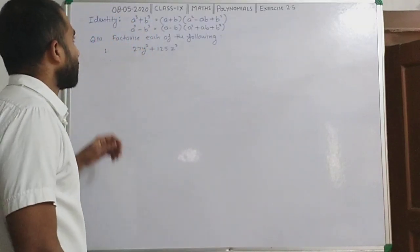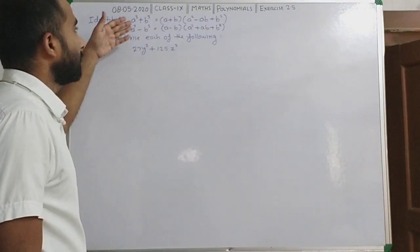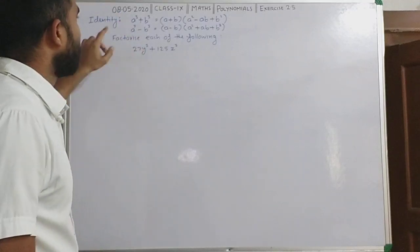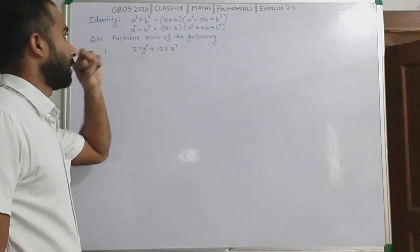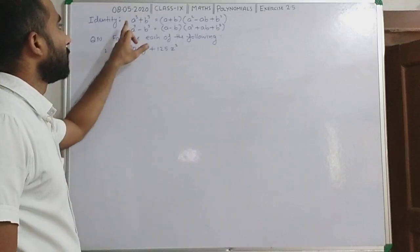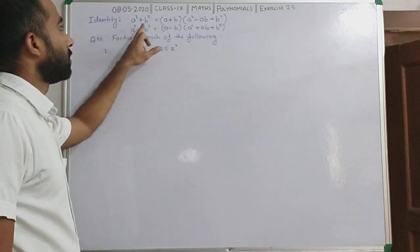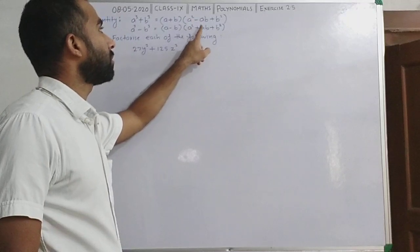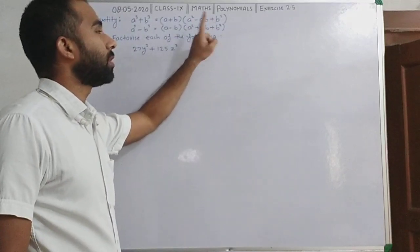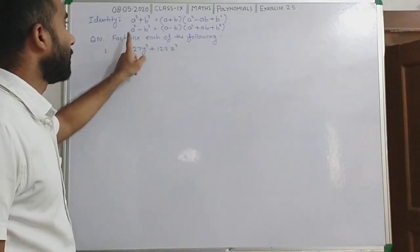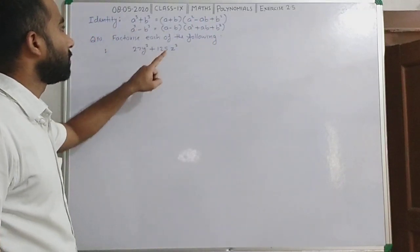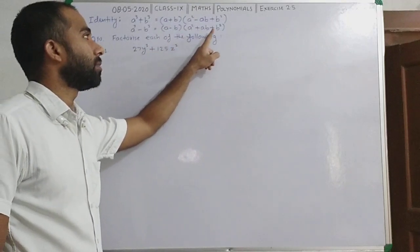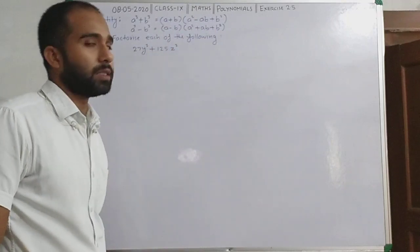You can see there are some identities I have written on this board. There are two identities. A cube plus B cube gives us A plus B, then A square minus AB plus B square. And A cube minus B cube gives us A minus B, then A square plus AB plus B square.